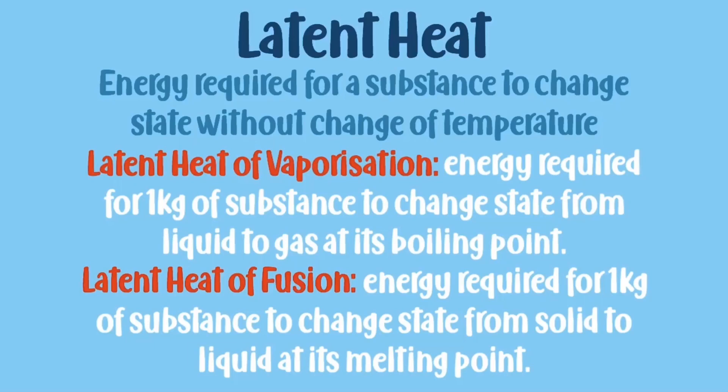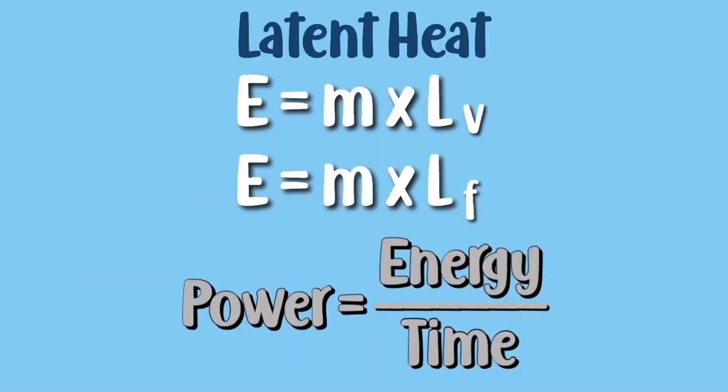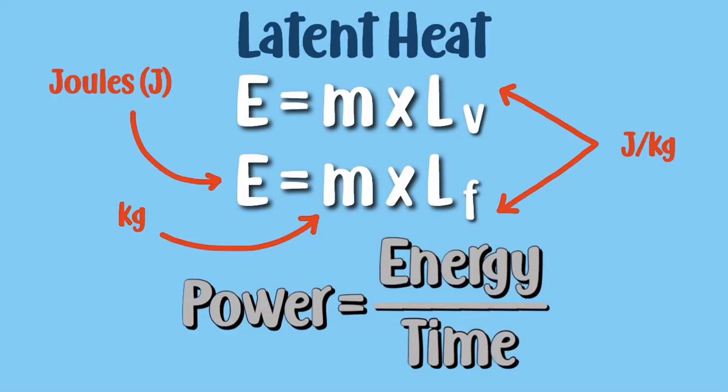The formula for latent heat is E equals mL. You should also know that power equals energy over time. Energy is measured in joules, mass is measured in kilograms, and latent heat of vaporization and fusion is measured in joules per kilogram.